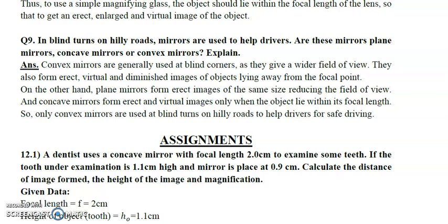A plane mirror gives an erect image but only of the same size, so the viewable area is limited. A concave mirror gives a virtual erect image only for objects within its focal length, so it shows very little of the surroundings. Therefore, convex mirrors are used at blind turns on hilly roads to help drivers because they provide an erect, virtual, and large-area view. If anything is unclear, you can ask.